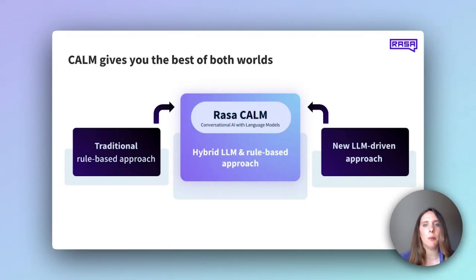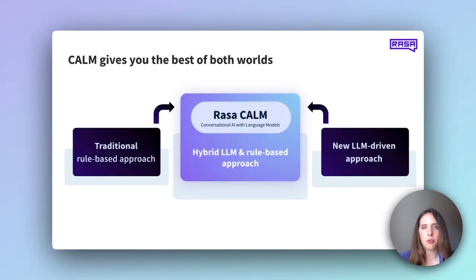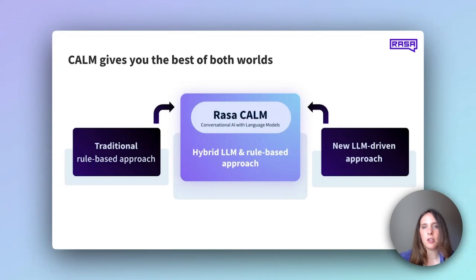The language model helps to improve understanding and drive the conversation, but the business processes and answers that fulfill your customers' requests are governed by preset rules that your team can define. This hybrid approach allows for the creation of more intelligent, more resilient AI assistants that are still easily controlled, explained, and measured. Rasa has always been known for its flexibility as a framework, and CALM is no different. With CALM, you can decide exactly how and where to use language models, tailoring solutions to your needs now and staying open to future innovations as your requirements evolve.